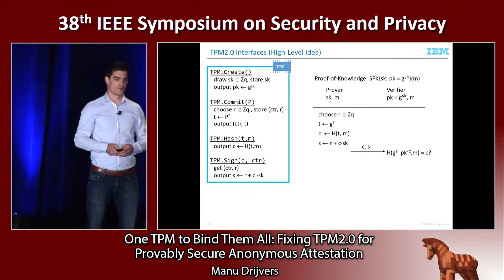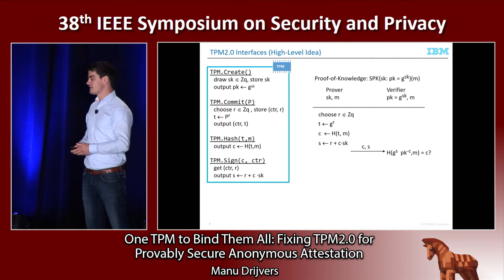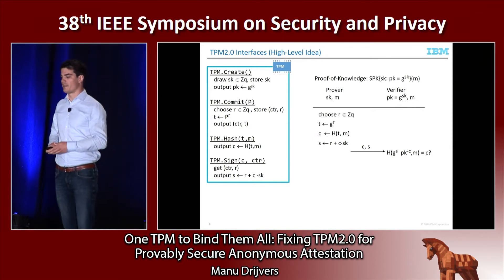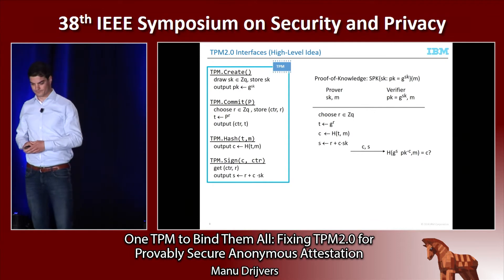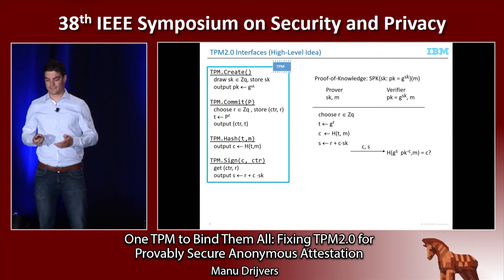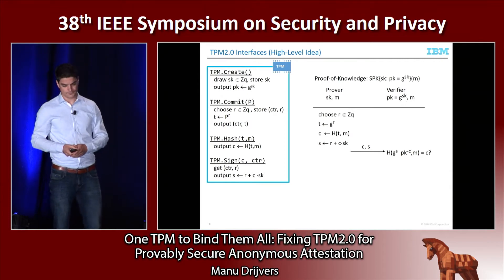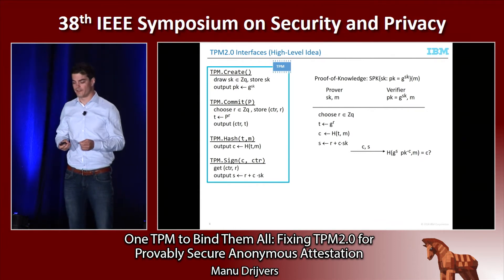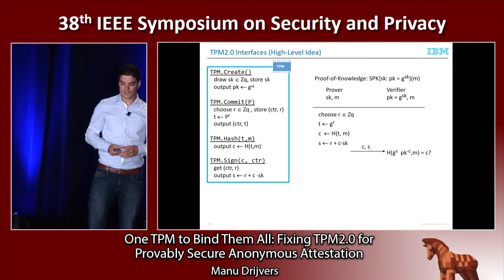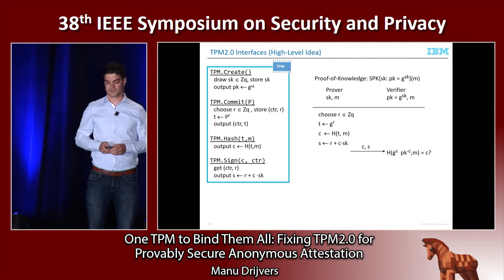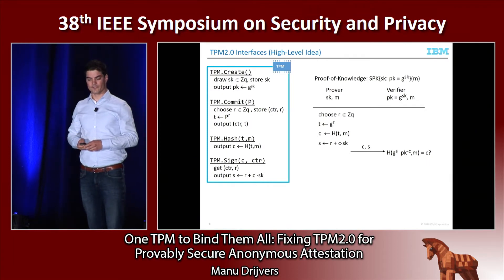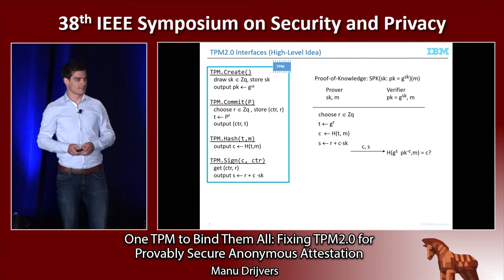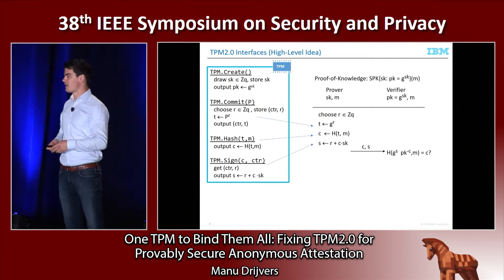Let's look at how TPM 2.0 actually works. Attestations have the form of a zero-knowledge proof proving that you signed some message. The simplest zero-knowledge proof is called the Schnorr proof, where the prover proves that he signed some message M with a secret key that he does not reveal. For a practical DAA scheme, the host would need to extend this proof to also prove that the secret key is certified. The protocol roughly has three steps, and we have four commands — the relevant TPM commands useful for anonymous attestation — which correspond exactly to the steps of this zero-knowledge proof.